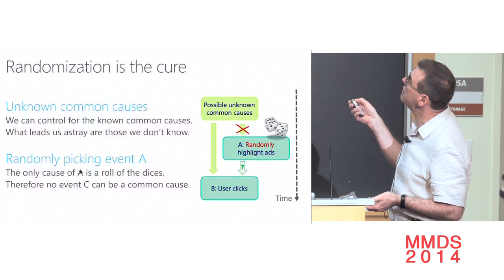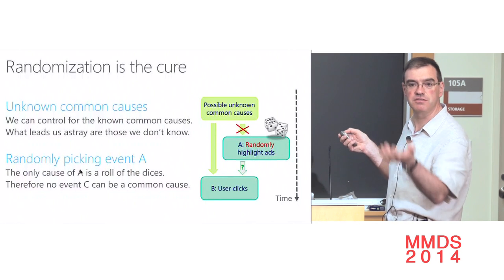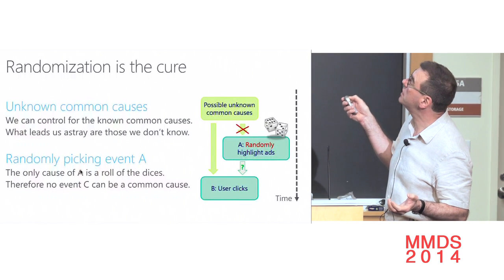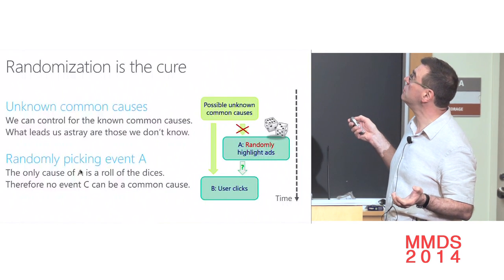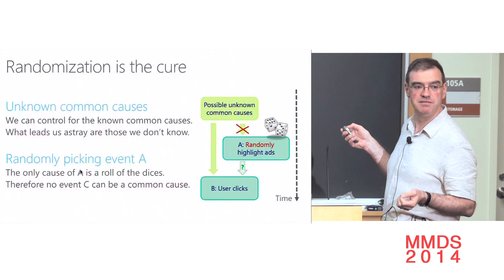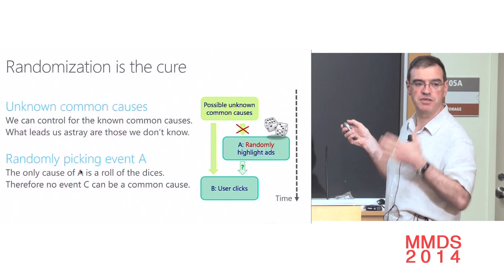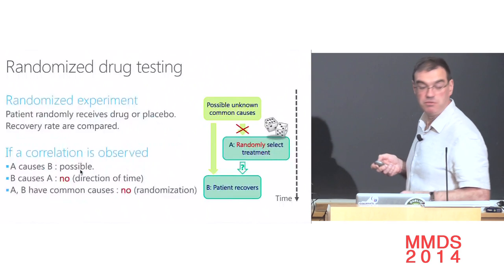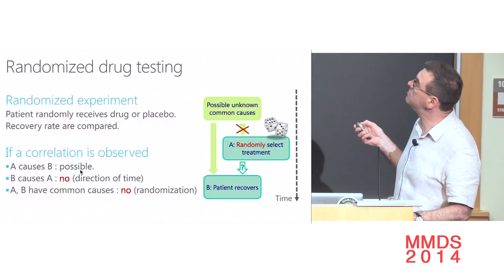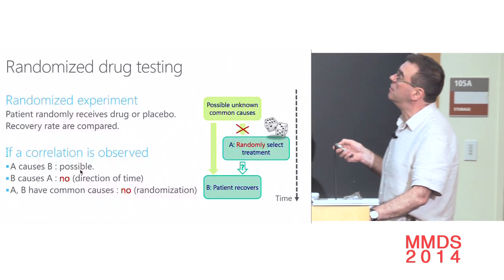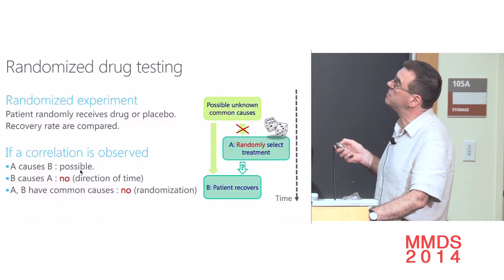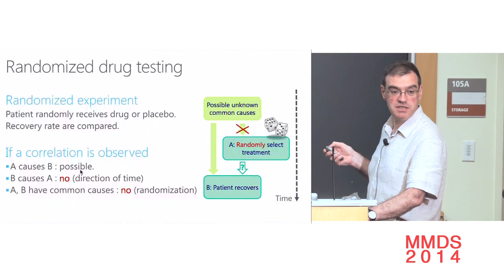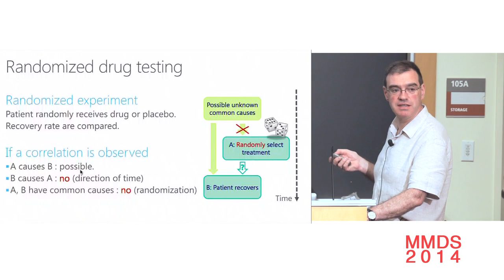The first observation: if you want to ask a manipulation question, randomization is the cure. If you choose A randomly with dice — not something that comes from elsewhere in the system — you break the link that enables common causes, known or unknown. Because the only cause of A becomes a roll of the dice, the common cause case is no longer possible. A typical example in medicine is randomized drug testing: a patient randomly receives a drug or placebo and we compare recovery rates — a way to determine whether giving this drug to everybody is actually going to help.